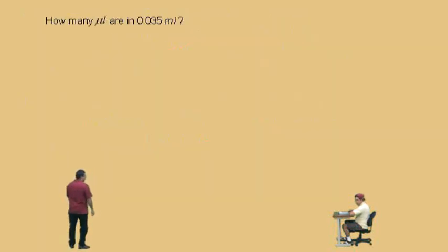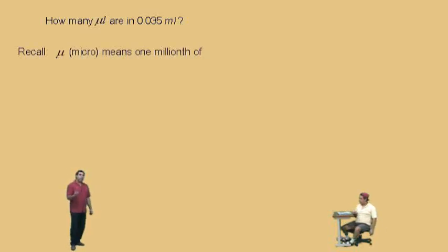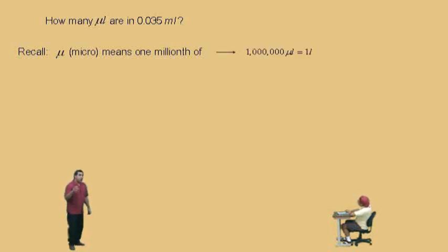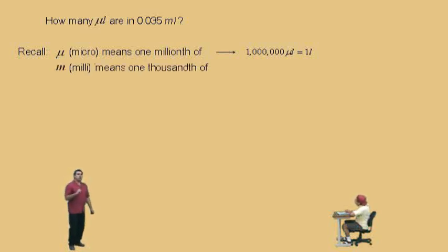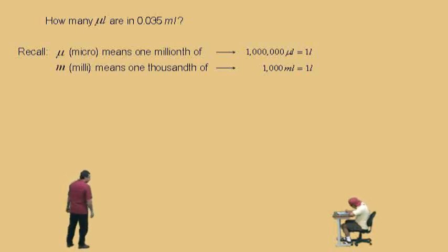Let's do another one. How many microliters are in 0.035 milliliters? Don't get scared. Recall that micro means one millionth of, so therefore there are one million microliters in one liter. Also recall that milli means one thousandth of, so therefore there are a thousand milliliters in one liter. We're going to need those facts to do this problem.